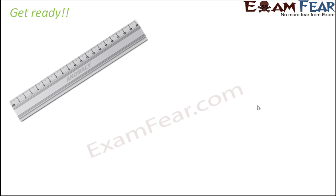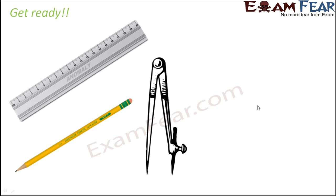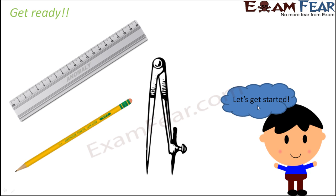You would need a couple of things to do constructions. The first thing is a ruler, a pencil, and a compass. These are the three things which are mandatory to do these constructions. Without these, you cannot do them. So once you have all of these, let's get started.